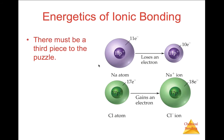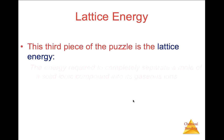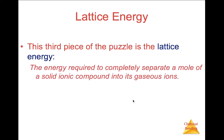There must be a third piece to the energetics of ionic bonding. Besides losing an electron, which is called ionization energy, and gaining an electron, which is called electron affinity, there must be another form of energy taking place. What is accounted for is the electrostatic attraction between the newly formed sodium cation and the chloride anion. This electrostatic attraction is called lattice energy.